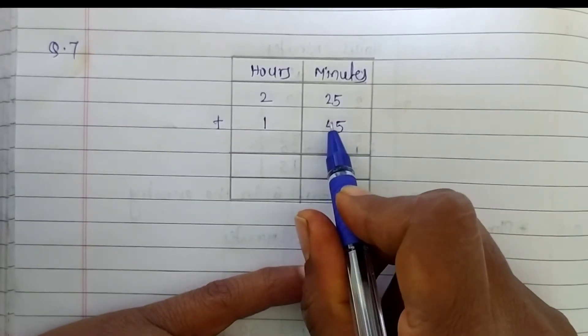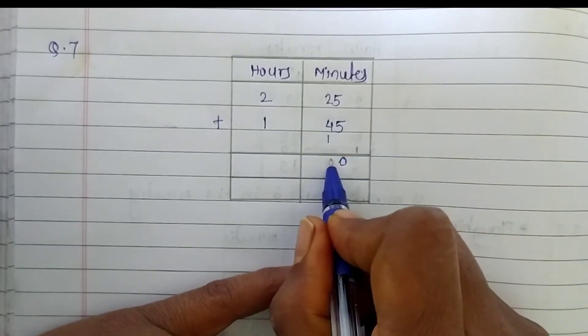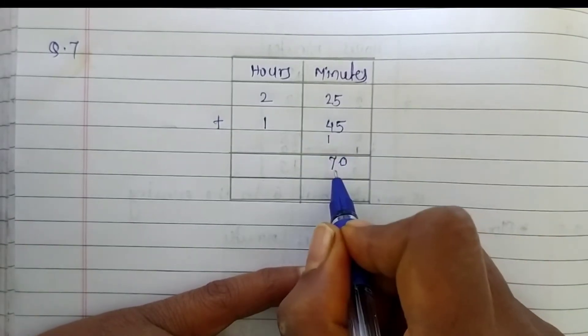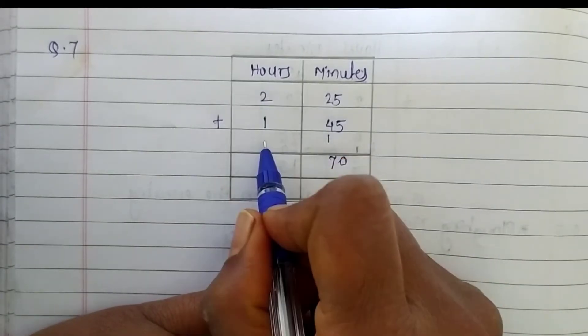4 plus 2, it's 6 plus carried 1. Make it 7. So 70 minutes here now. And hours, 2 plus 1, it's 3.